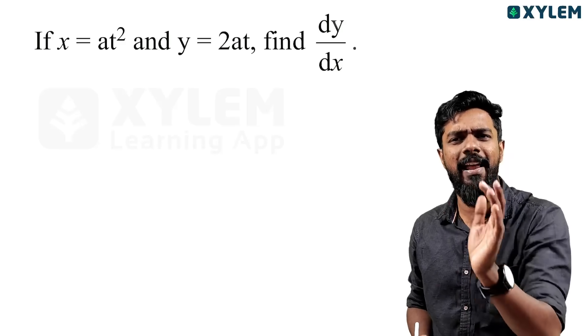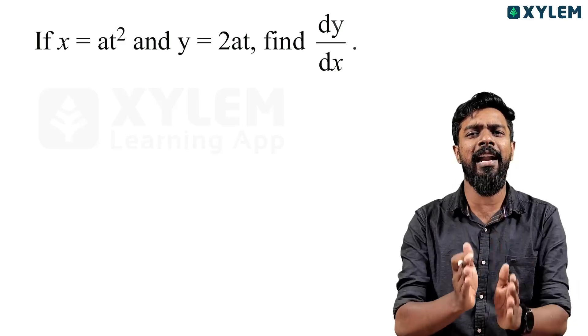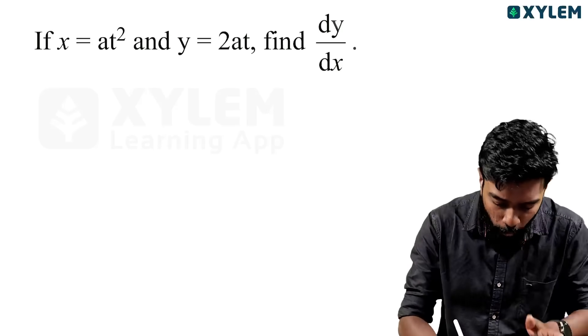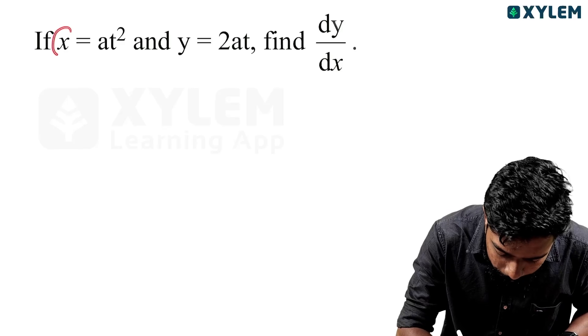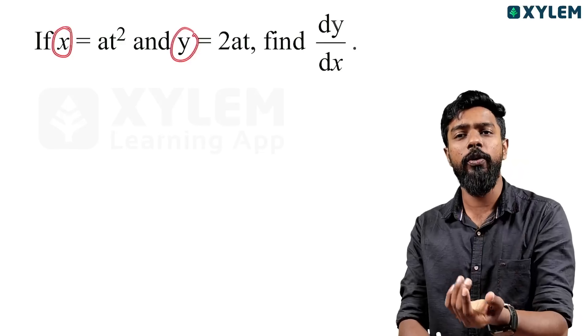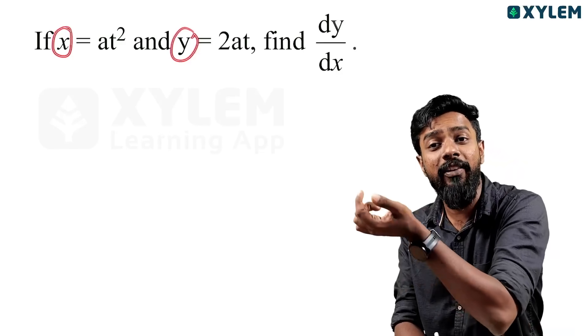What is a parametric function? In a parametric function, x equals some expression and y equals some expression, both in terms of another variable — the parameter.